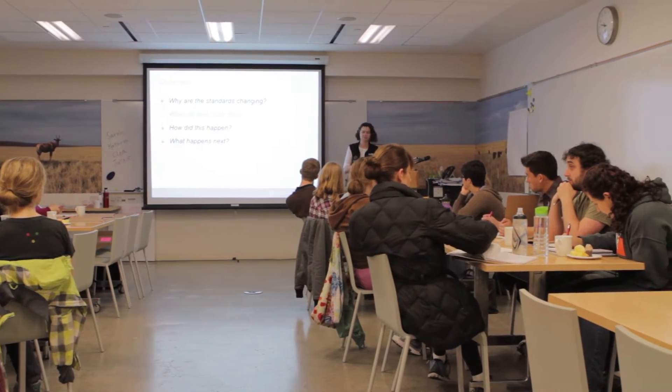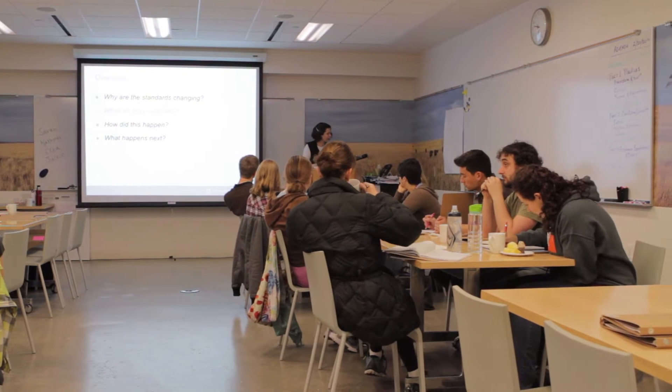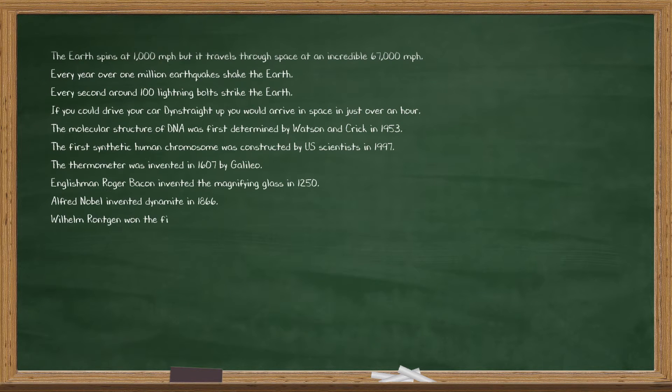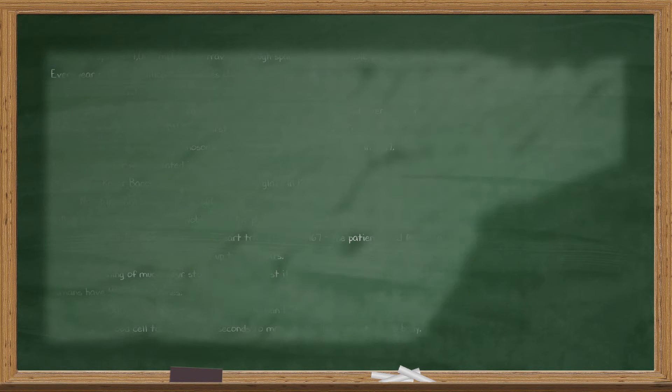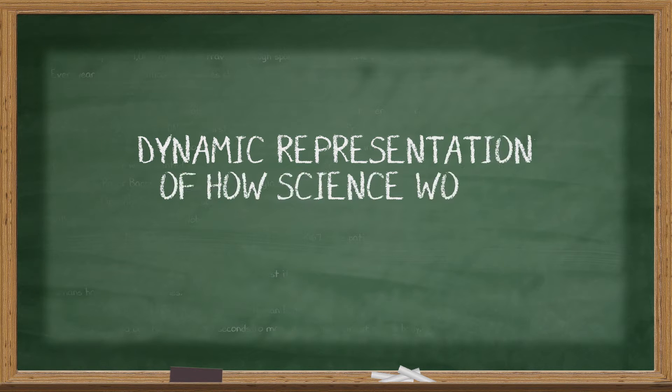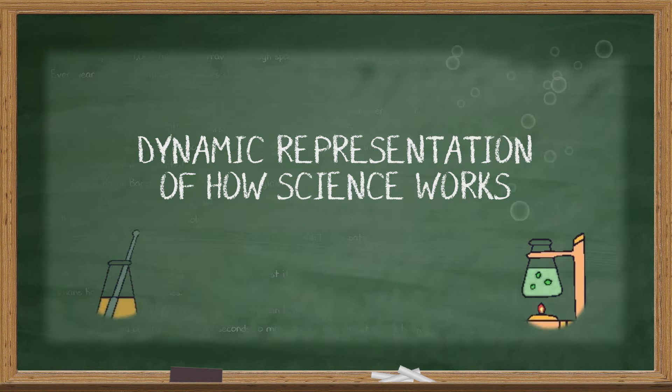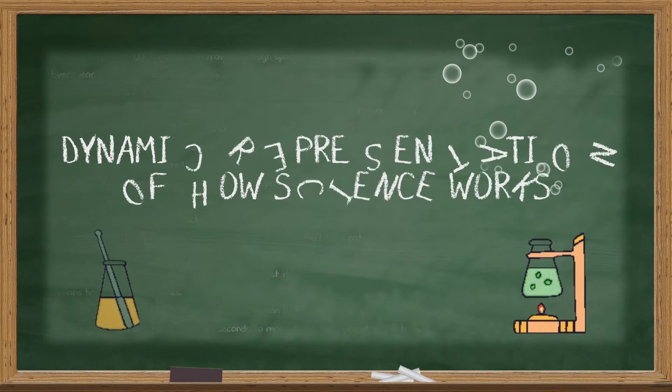The first section is all about why there's a need for new science standards. Essentially, standards are shifting away from being a list of scientific facts that students need to know, and towards a more dynamic representation of how science actually works.